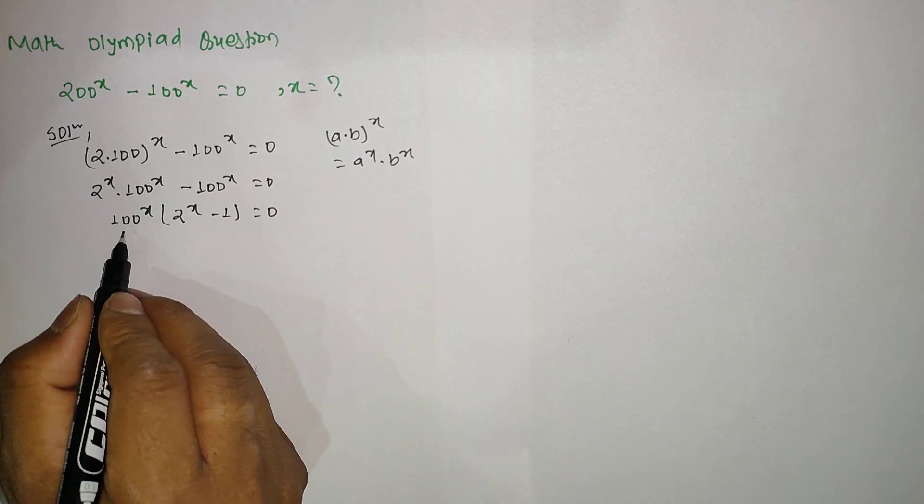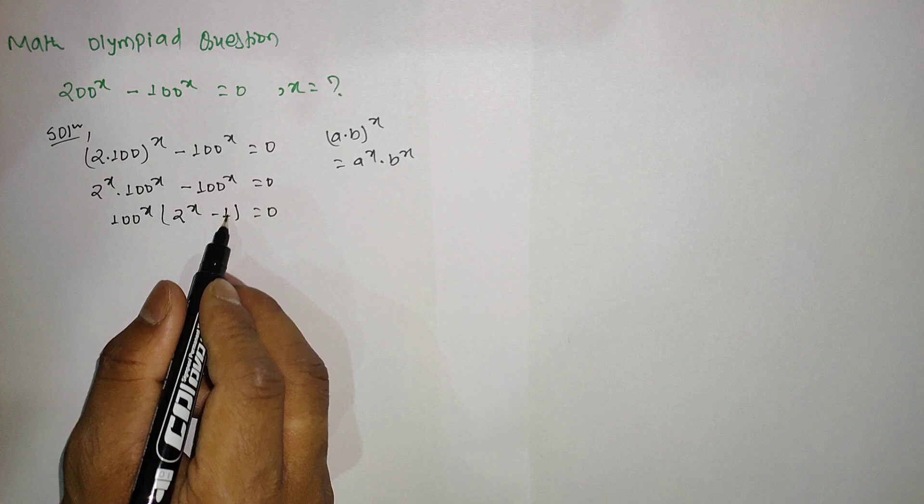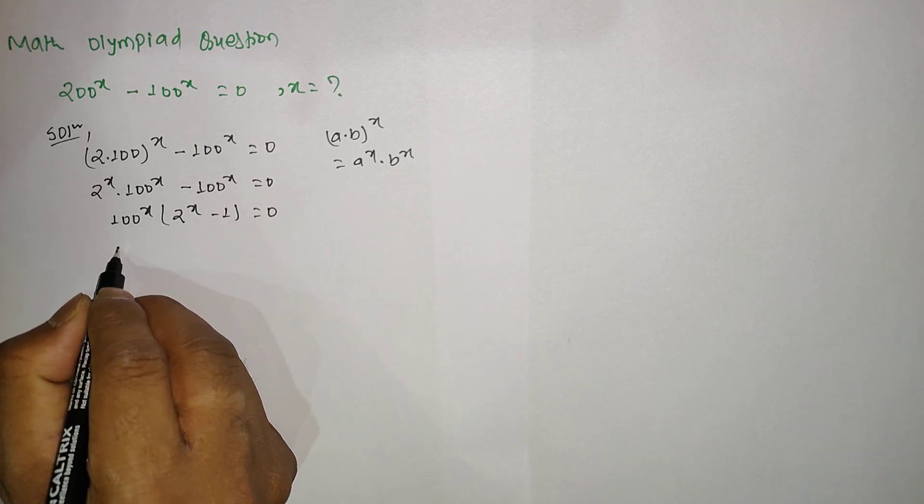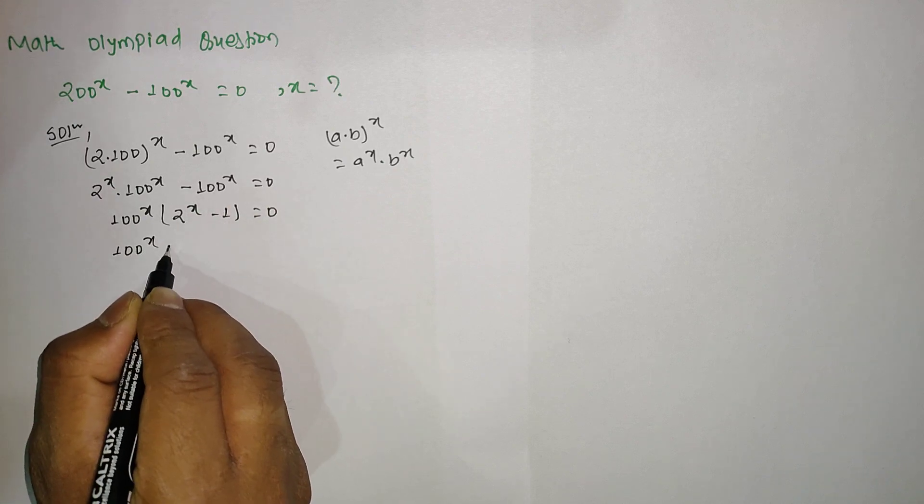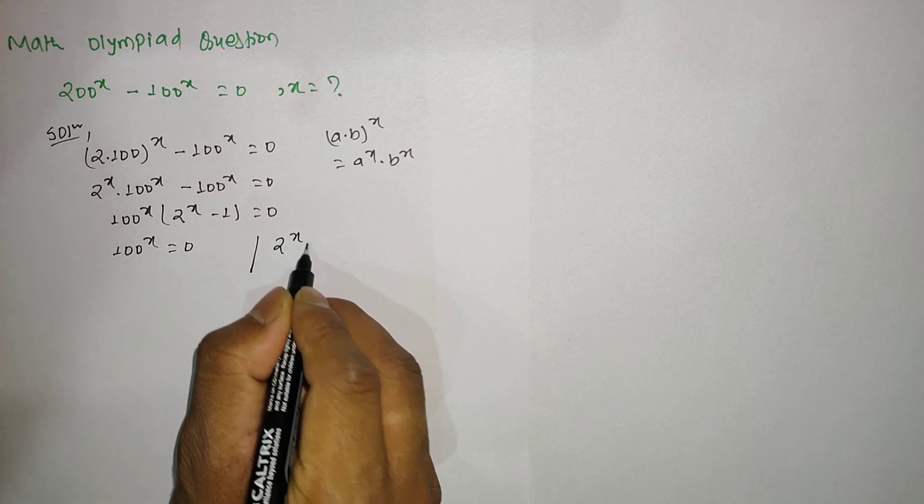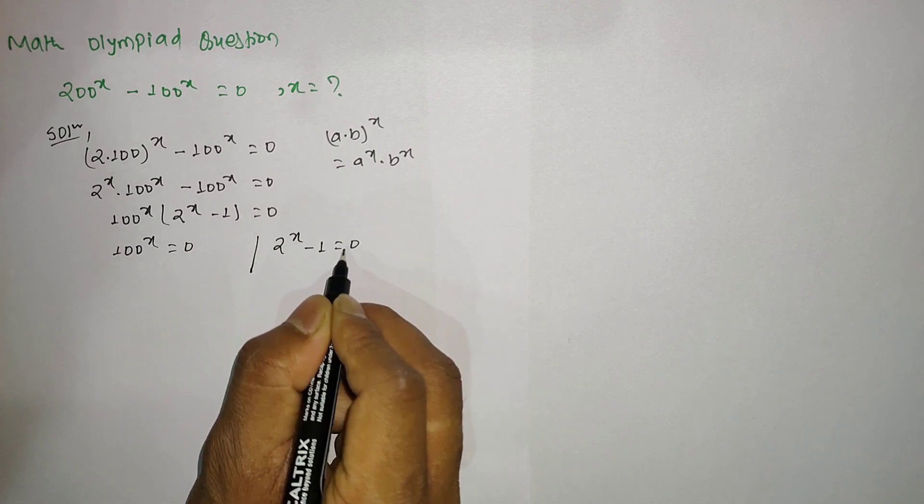So here we can say that either this value equals 0 or this value equals 0. That is, 100^x = 0 or 2^x - 1 = 0.